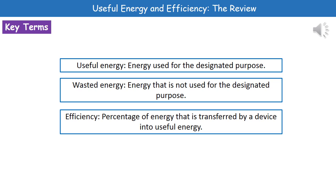Wasted energy is the other forms of energy that we're generating that are not being used for that same purpose. And finally, efficiency is the percentage of energy that's being transferred by a device into the useful energy — basically how much of the energy we're actually getting for the job we want to do.